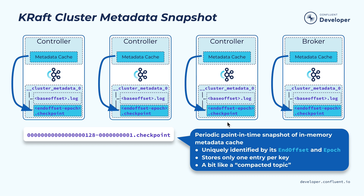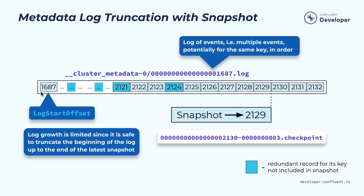We need a way to prevent the metadata log from growing forever. We can't simply truncate all the data in the metadata log because it may still contain the latest values for resources the cluster is managing. Instead, we use a concept called snapshot. Periodically, each controller and broker takes the latest records from the metadata cache and writes them as a snapshot. Once a snapshot is written at a particular end offset, all records before that offset in the metadata log are redundant and can be truncated. The snapshot, together with the remaining metadata log, still gives us the latest metadata for the whole cluster.